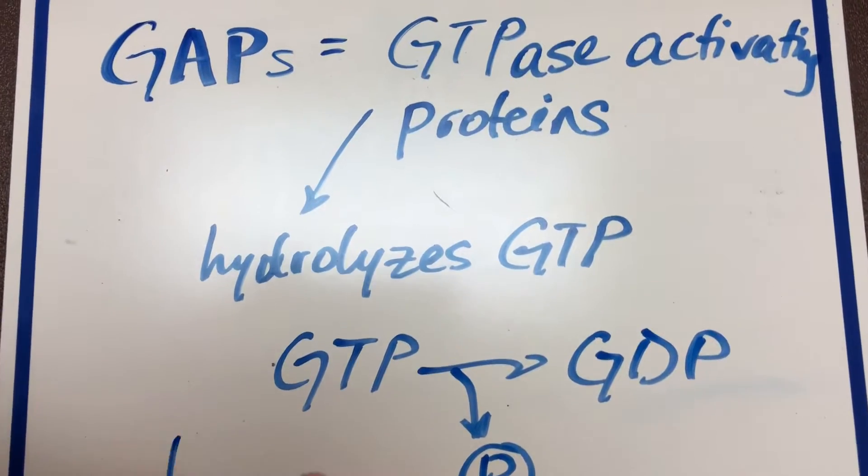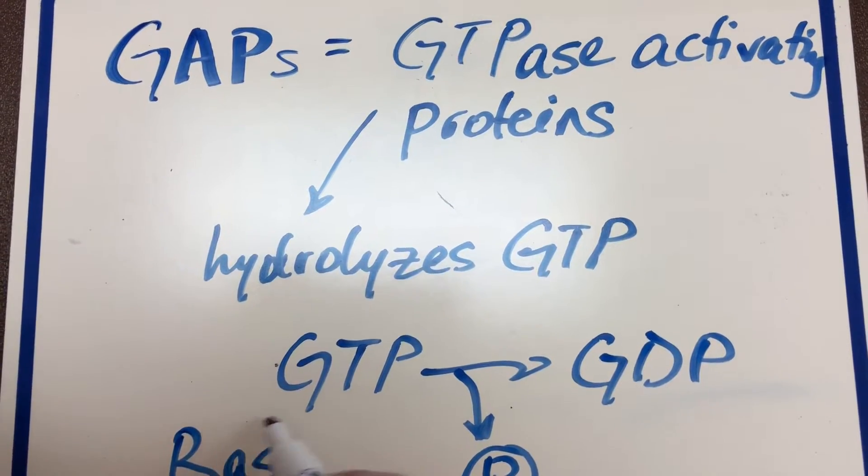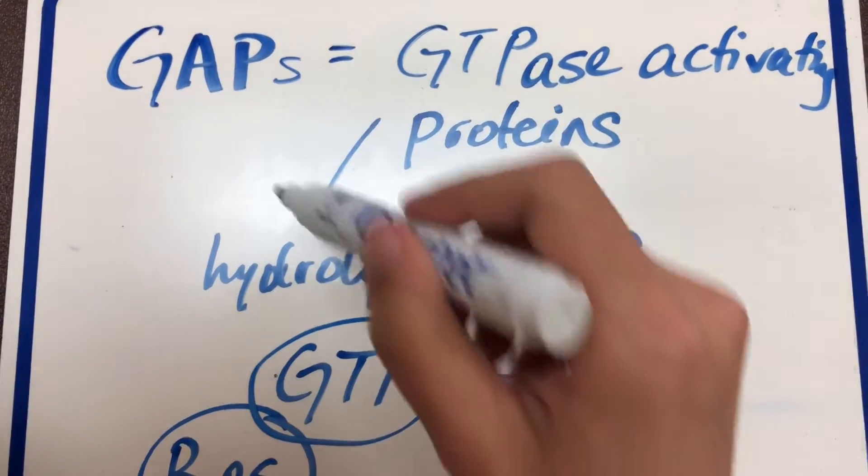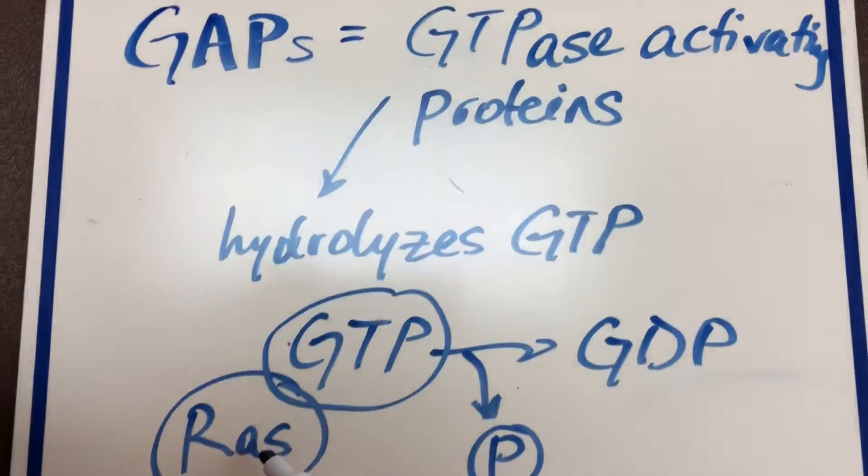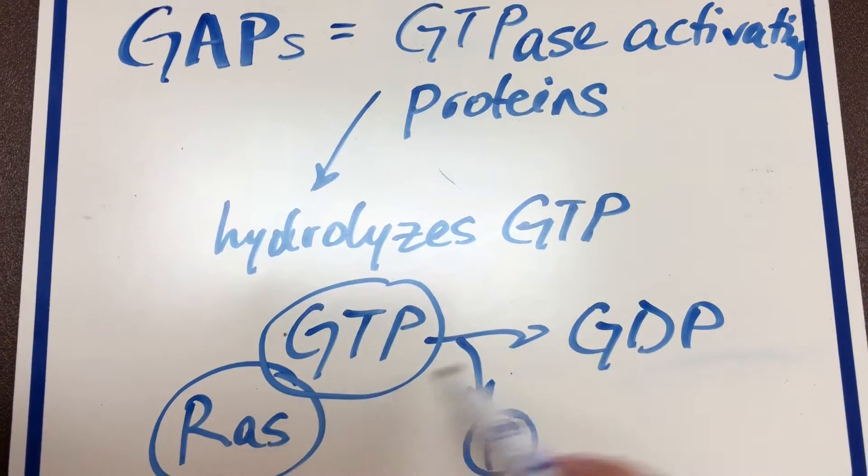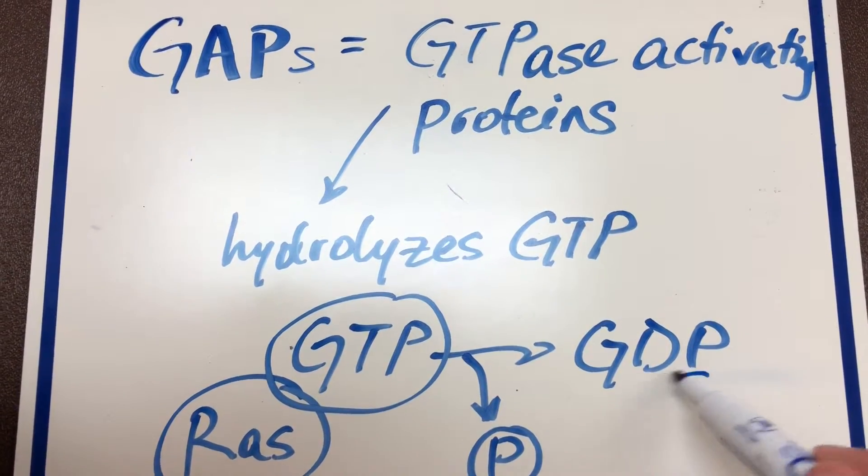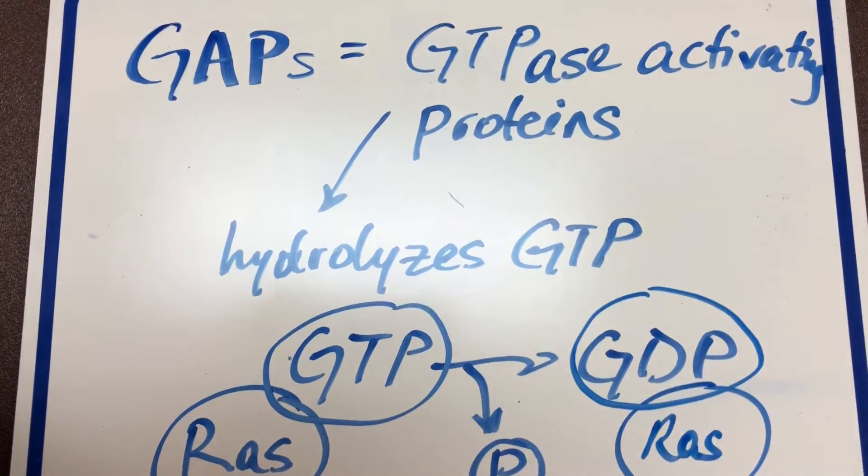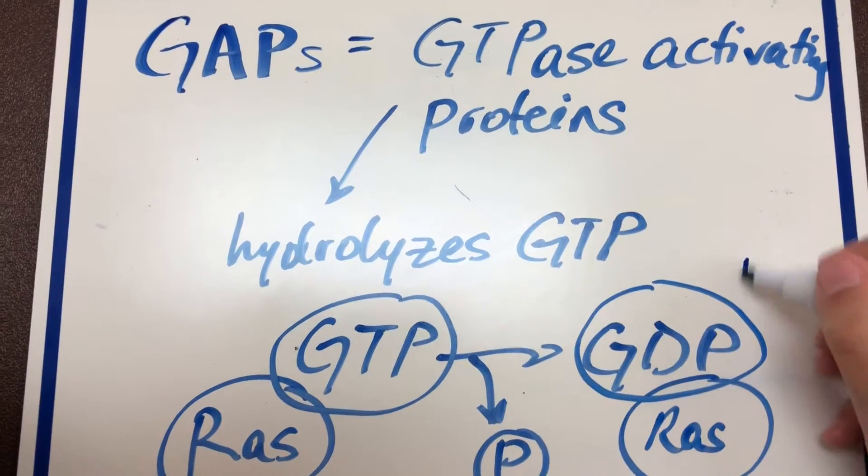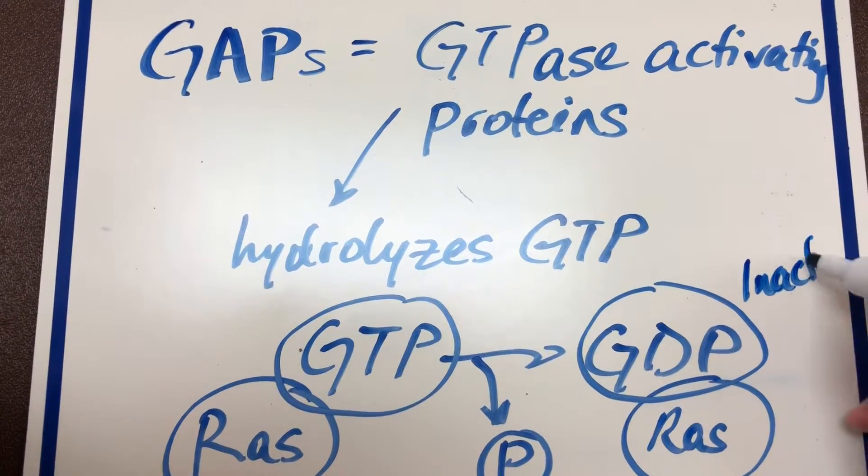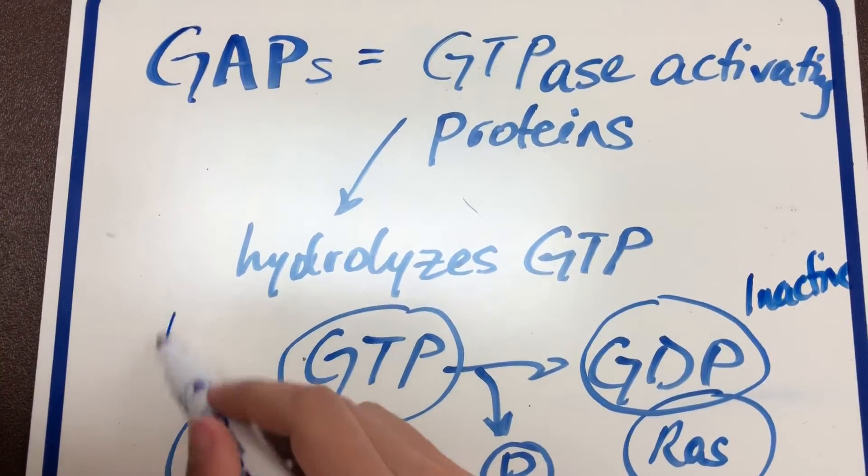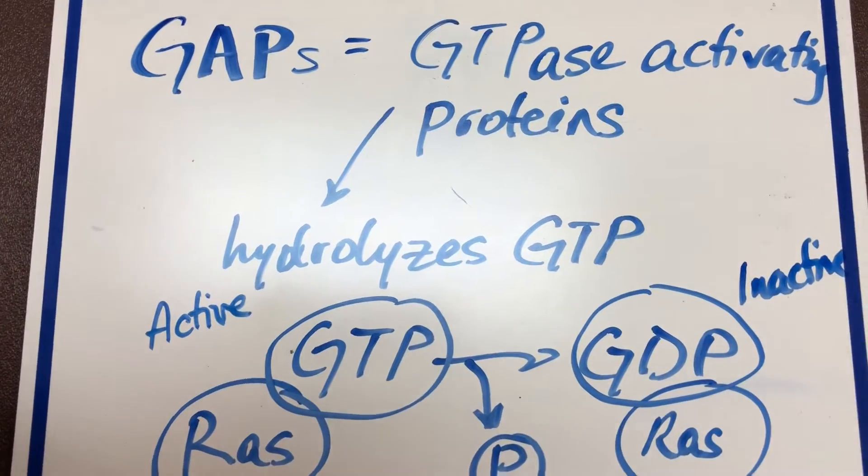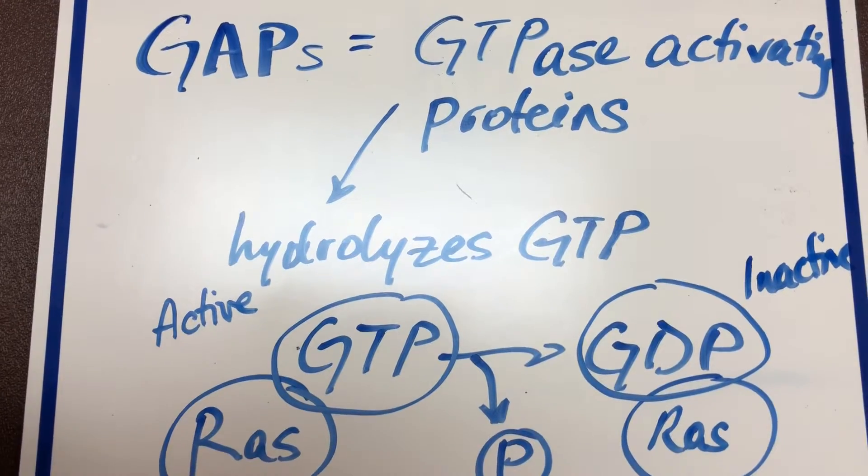Right? So our RAS was bound to GTP. If GAPs act on RAS, they're going to make it turn into GDP bound RAS, which is inactive. And remember, we said when RAS is active, it leads to the cascade, which promotes cell proliferation.